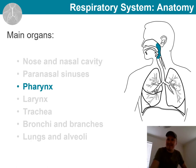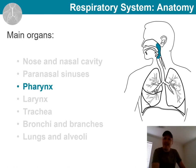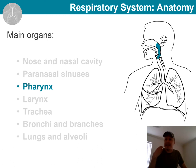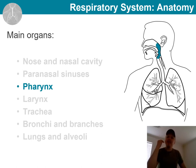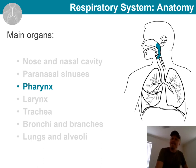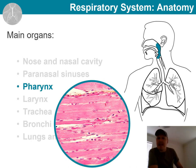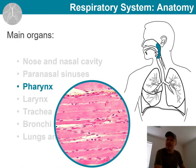Now, as we continue to follow the path of the air and its travel further down, we are ready to shift our focus to the next part — the pharynx. The pharynx is this muscular tube that runs posterior to the nasal cavity, all the way down to the start of the larynx, roughly at the level of vertebra C6. Its function is to connect the nasal cavity and oral cavity to the larynx and esophagus.